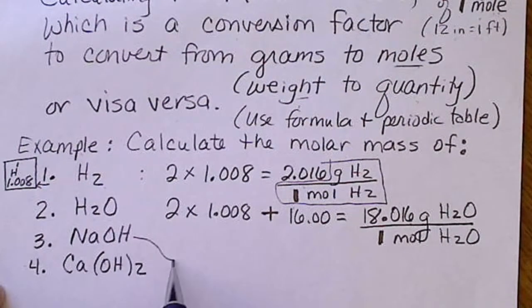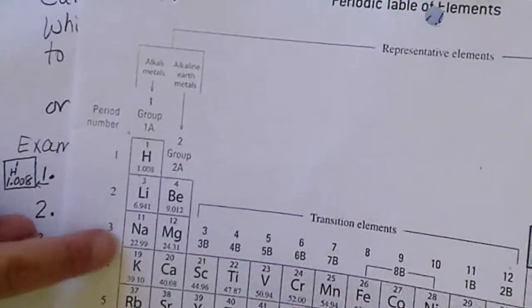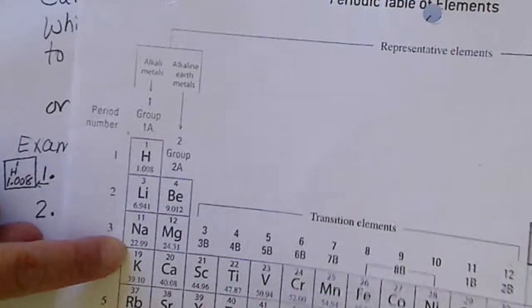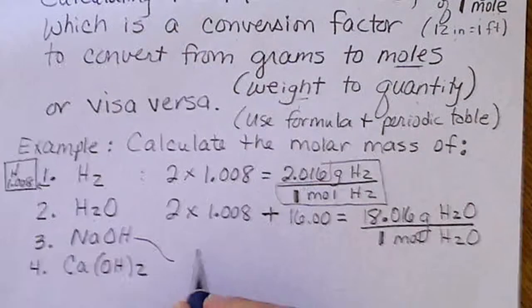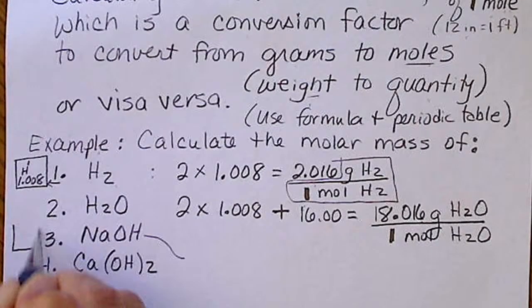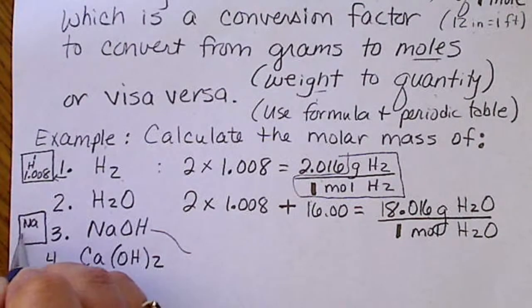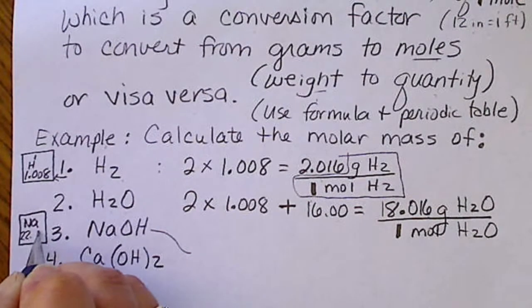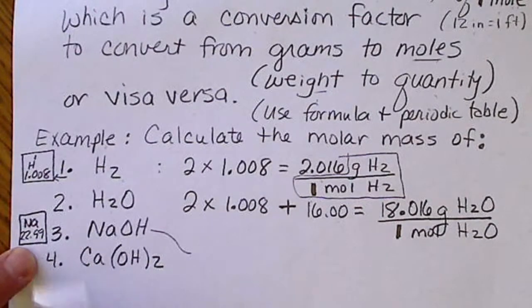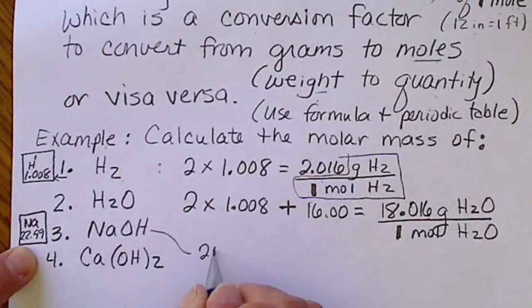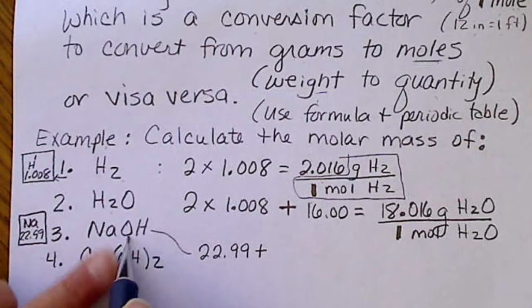For sodium hydroxide, we have a sodium atom. Sodium weighs 22.99, and we also have an oxygen and a hydrogen. If I put the symbol for sodium here, and if we looked on the periodic table, we would see 22.99. That's the mass of 1 mole of sodium. So this is 22.99 plus oxygen weighs 16.